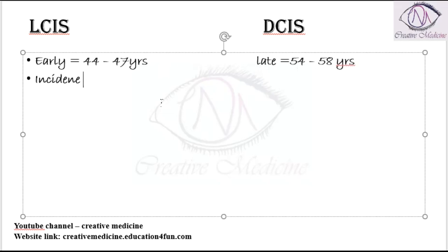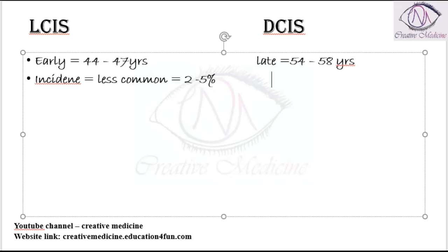Incidence of lobular carcinoma in situ is less common, that is around 2 to 5 percent. Incidence of ductal carcinoma in situ is actually more common, which is around 5 to 10 percent.